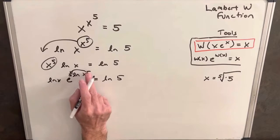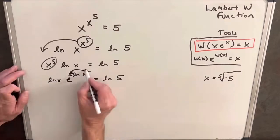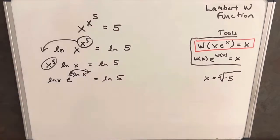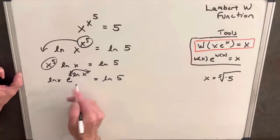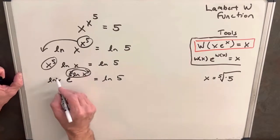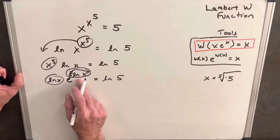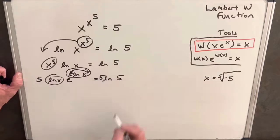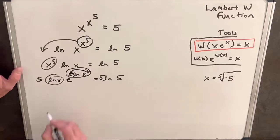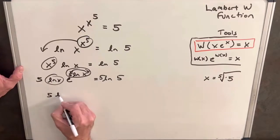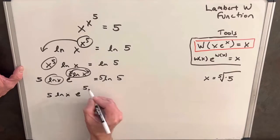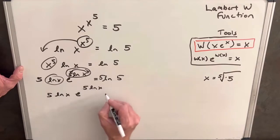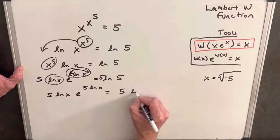So we'll just have our five ln x. But again, trying to get to this form, we want this piece and this piece to be the same. And what we can do now is we can multiply by a five in front here. And let me rewrite this so it's very clear: we have here on the left side five ln x times e to the five ln x equals five ln five.